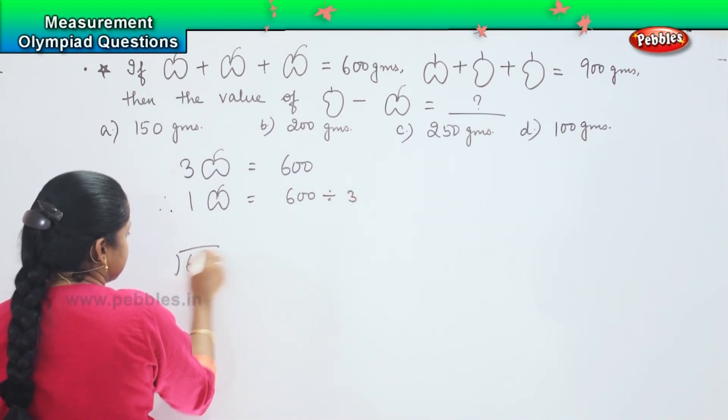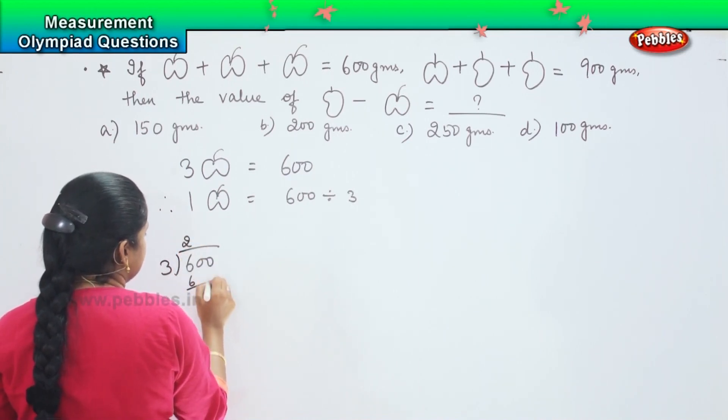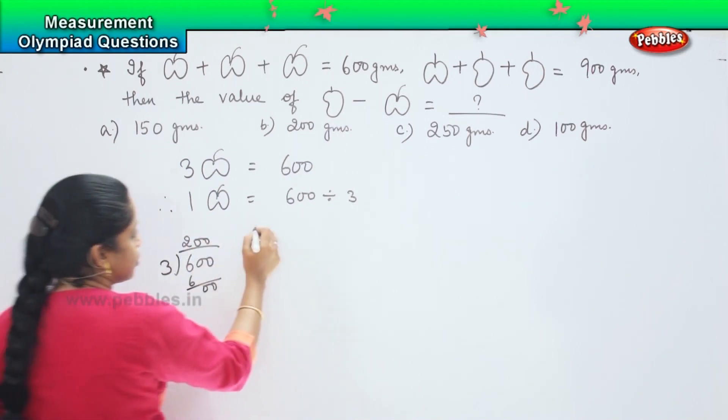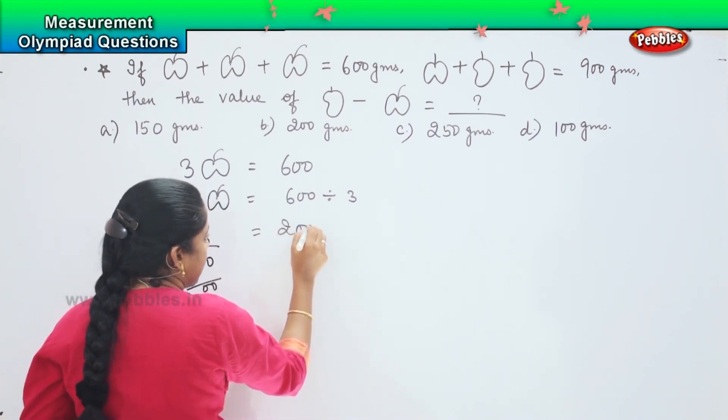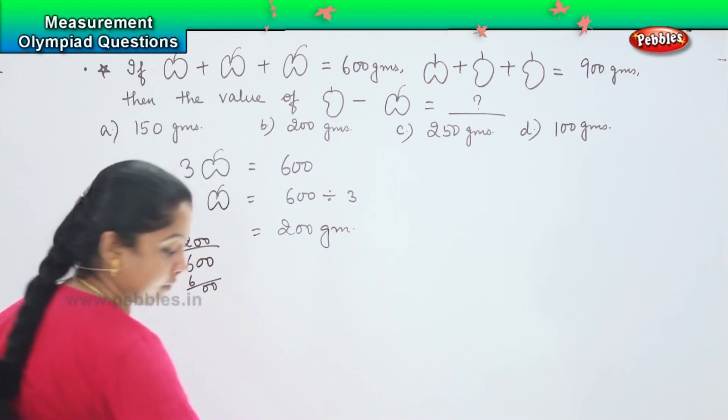Shall we do this? 600 divided by 3, 3 twos are 6 and then 0, 0. So which equals one apple equals 200 grams.